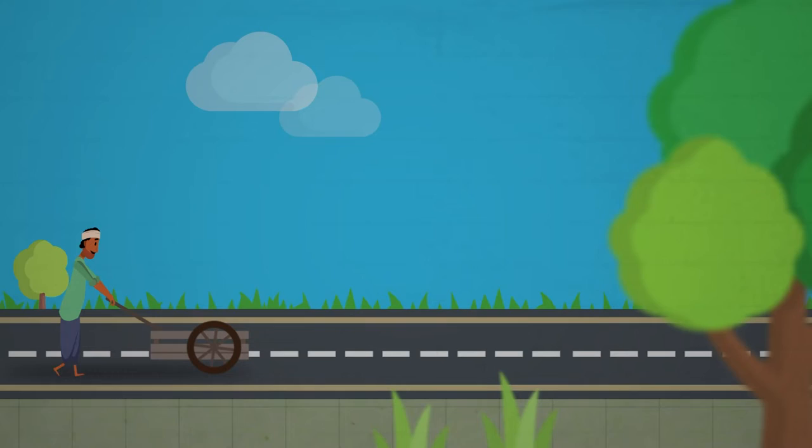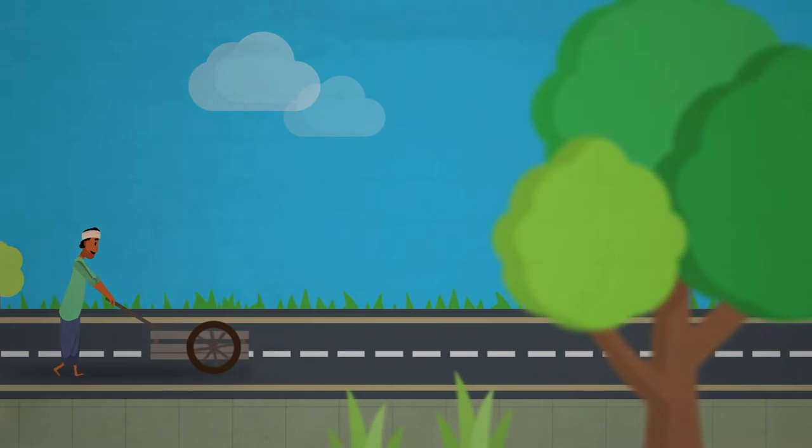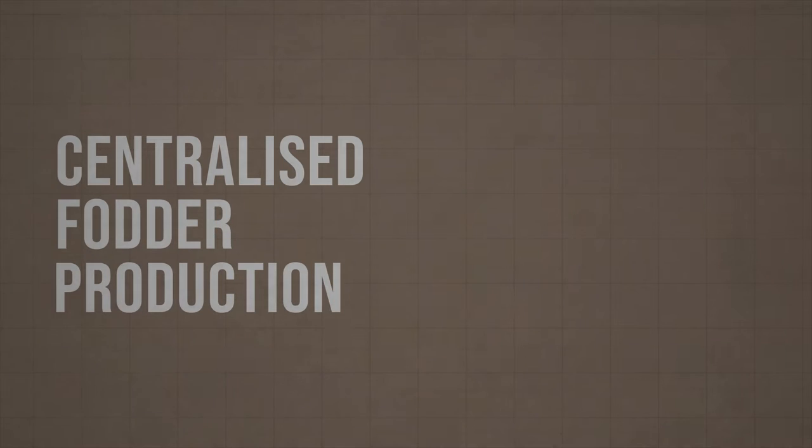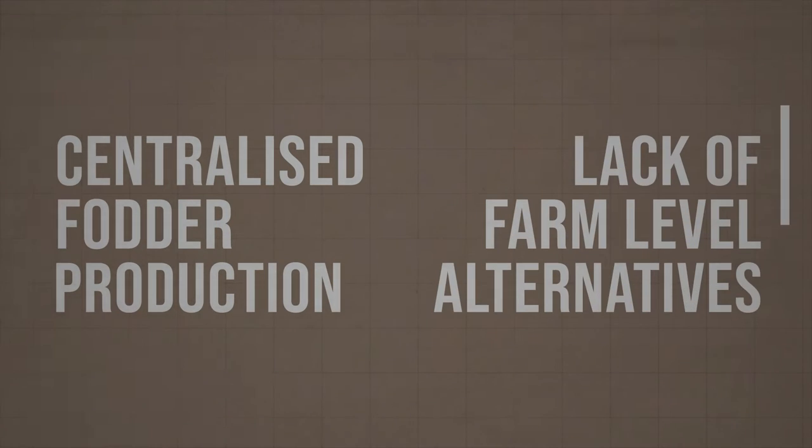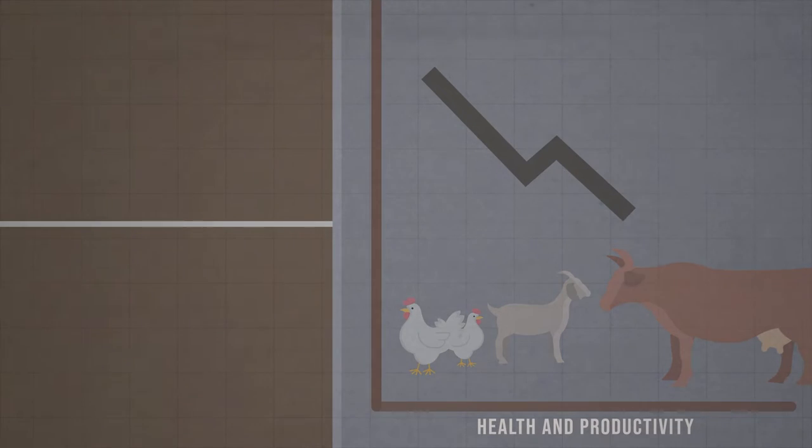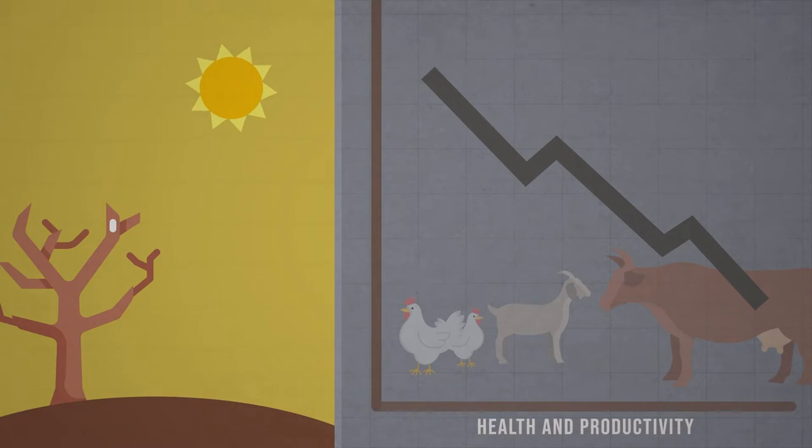Livestock farmers are forced to travel far to access basic inputs for animals. Centralized fodder production systems and lack of affordable farm-level alternatives affect livestock health and productivity, especially in heat-stress regions.